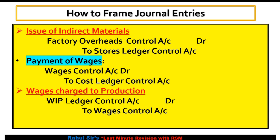Issue of indirect material: wherever the word 'indirect' appears — whether indirect wages or indirect materials — indirect is always related to factory. So the entry will be: Factory Overheads Control Account debit, to Stores Ledger Control Account, since materials are related to stores.